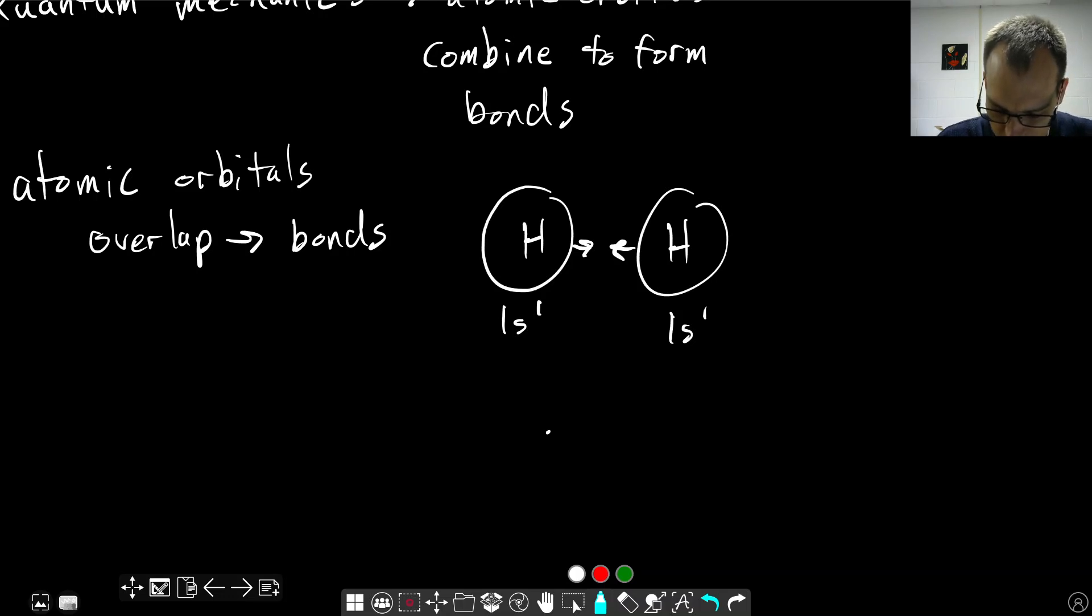Well, the valence bond theory says that the two nuclei will get closer and closer, and the orbitals will start overlapping with each other. And this will merge to become a single bonding orbital. And this is what we call a sigma bond.